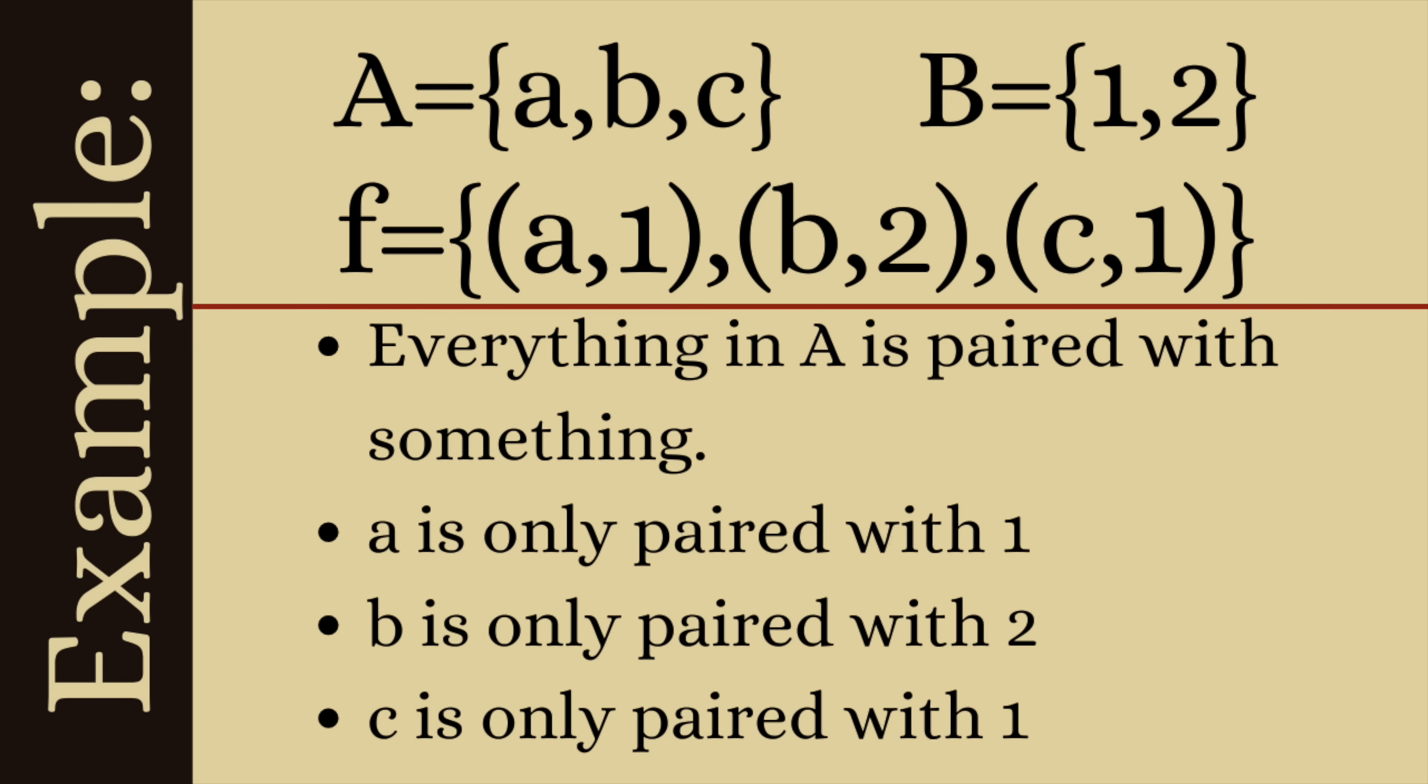So notice this is a function and that's because everything in A is paired with something in B. So a is paired with 1, b is paired with 2 and c is paired with 1 and a is only paired with 1. It's not also paired with 2 and it's not also paired with 3. Furthermore b is only paired with 2 and c is only paired with 1. So that means this is a function from capital A to capital B.